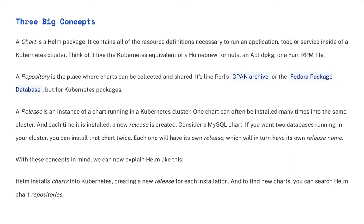Before we deep dive, you need to understand three simple concepts related to Helm: what is a Helm chart, what is a Helm repository, and what is a Helm release. A Helm chart is a Helm package. If I'm working on Prometheus and I'm one of the first to set it up, I'll create a bundle — a folder — with the Prometheus deployment, service, ingress, and config maps, and call it a Helm package. I then push this package to a repository where anybody can use it — just like pushing Docker images to Docker Hub.